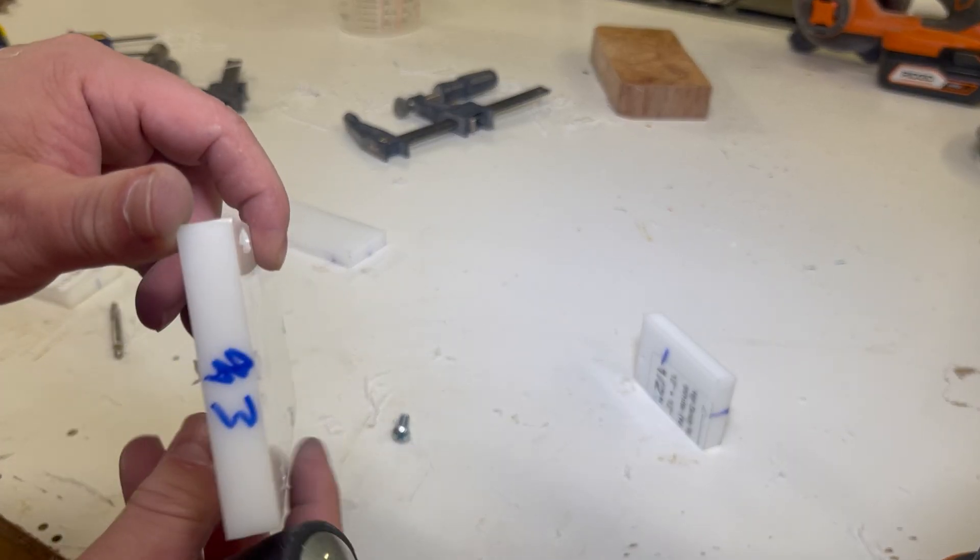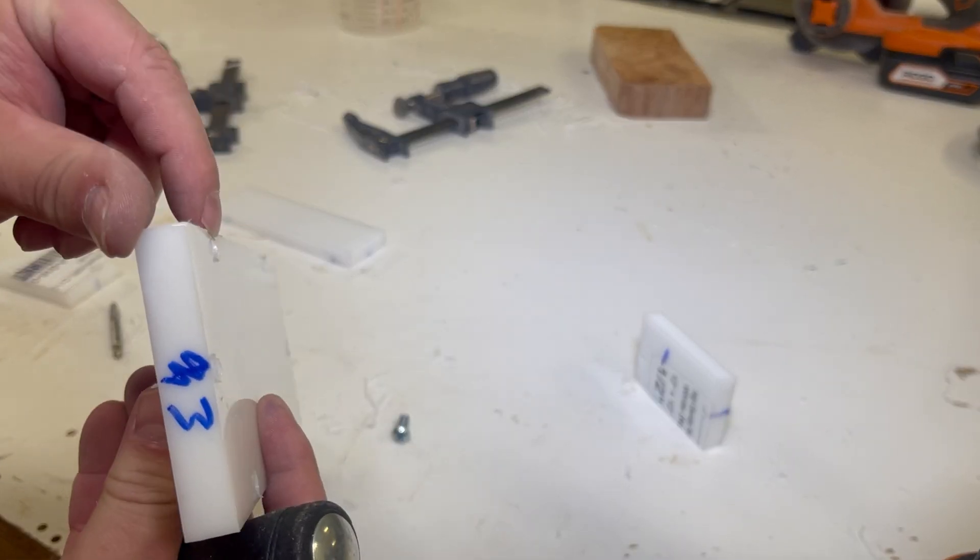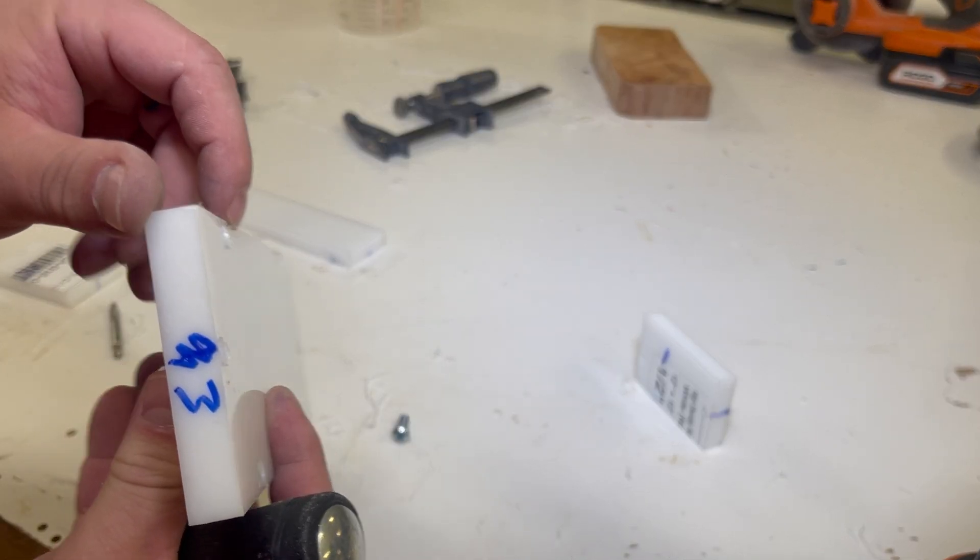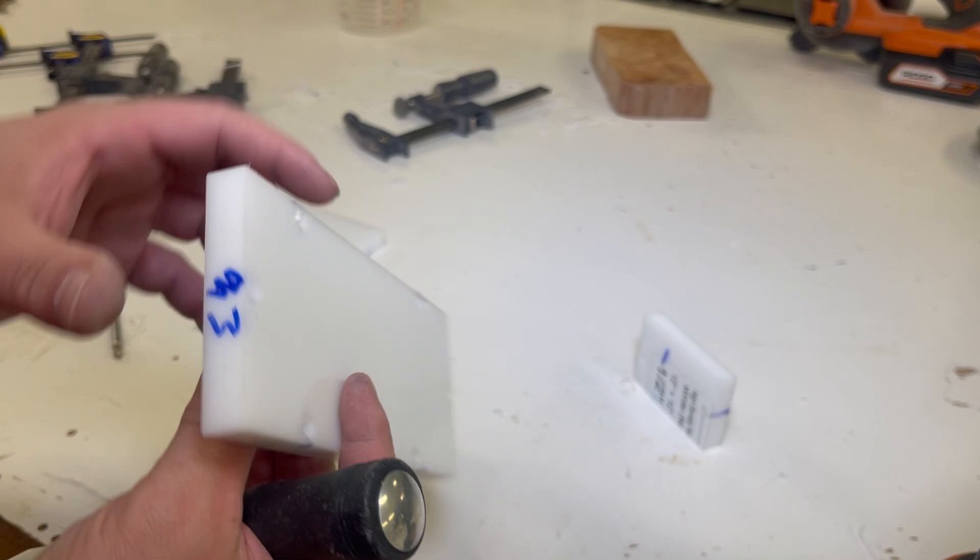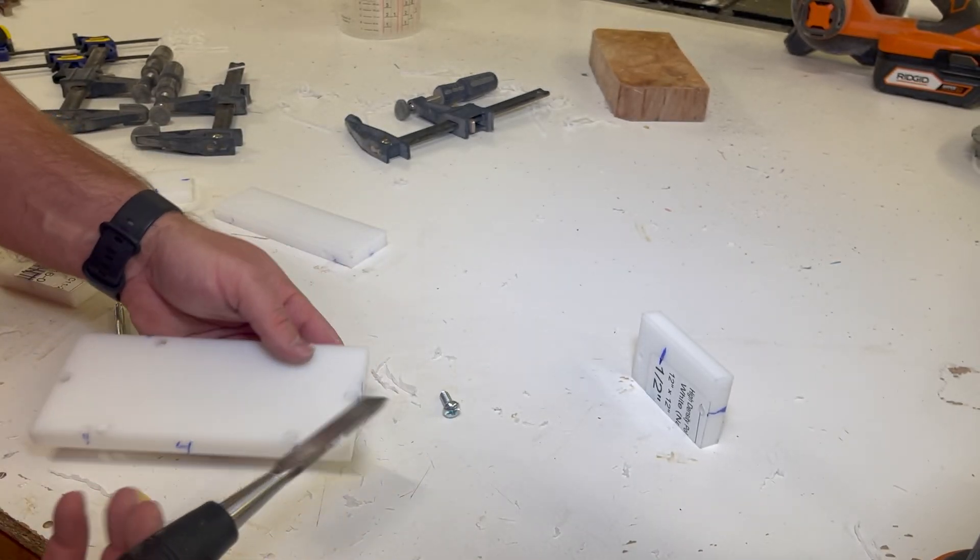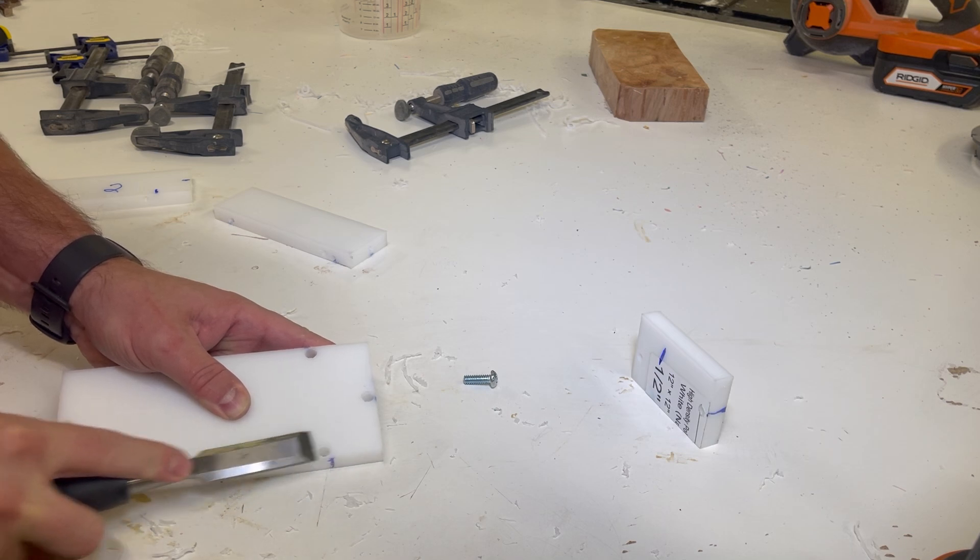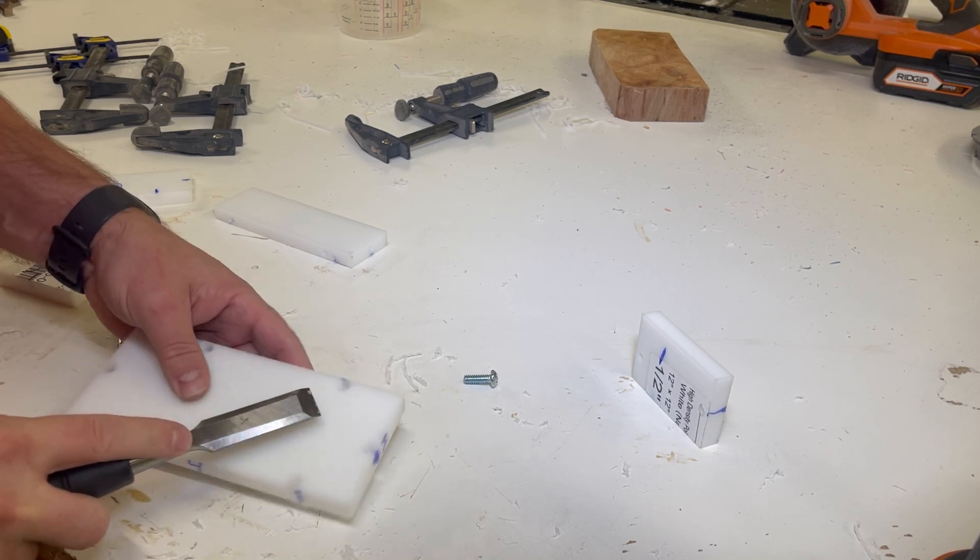So now everywhere that you drill is going to have some plastic coming through. You can see that it's protruding through. It's not going to seal right there when we put the plastic together. So all I do is get you a sharp chisel and knock that off of there. I'll do it to every hole.